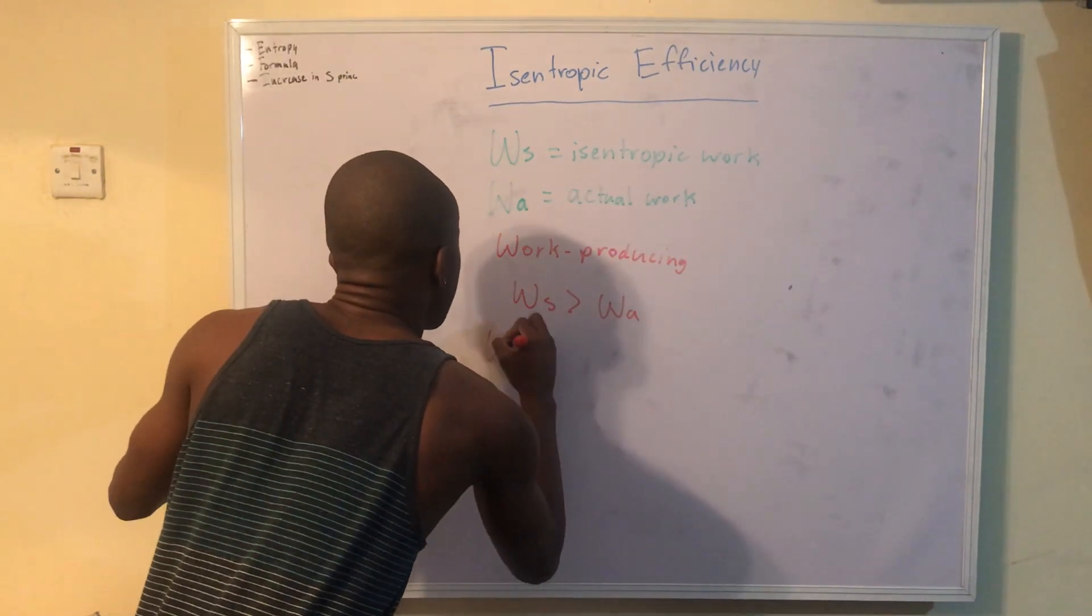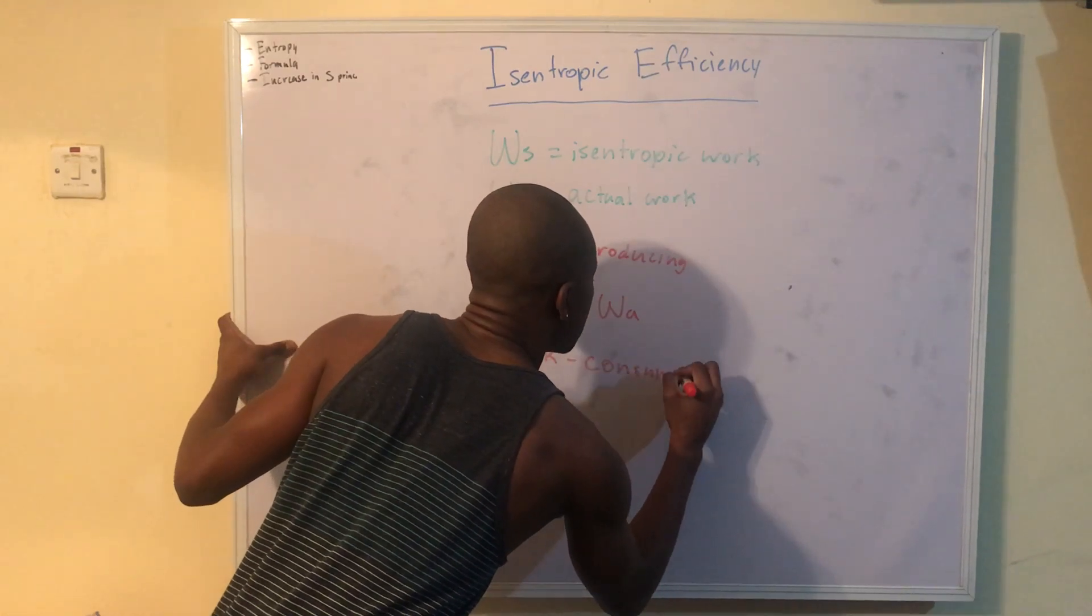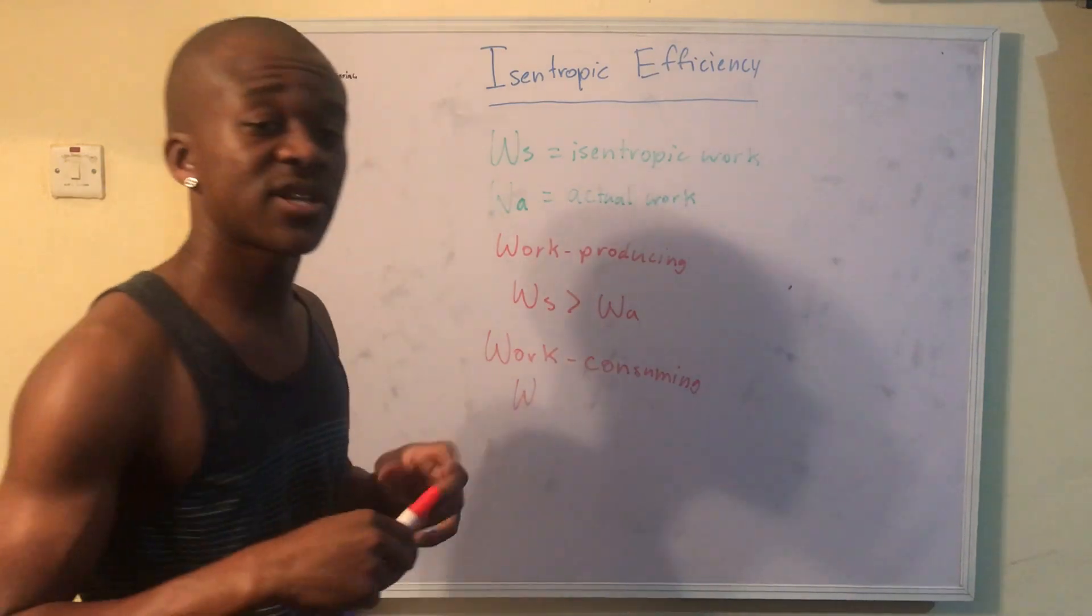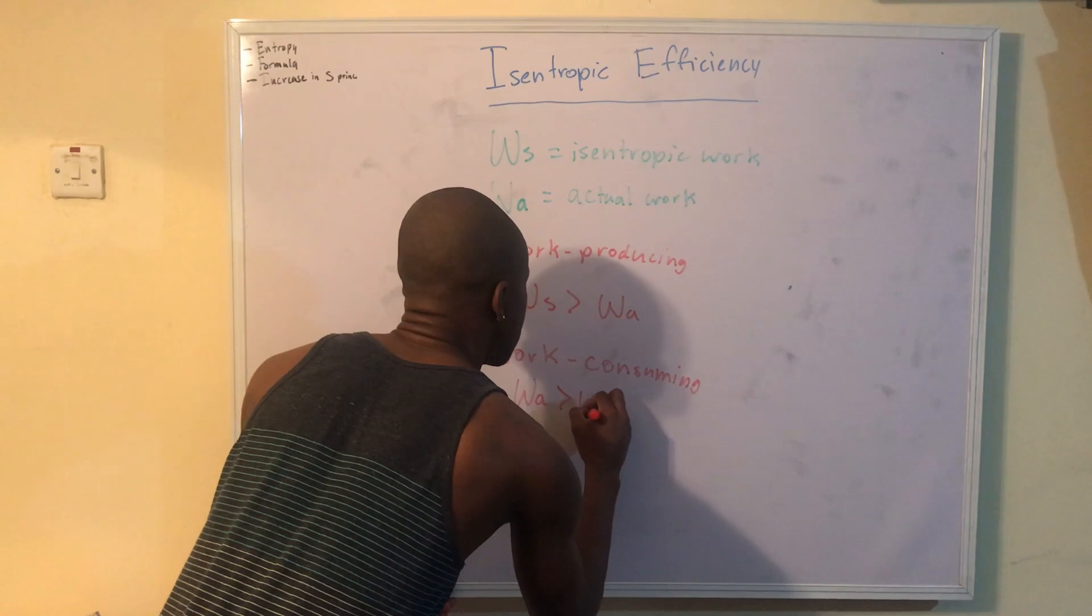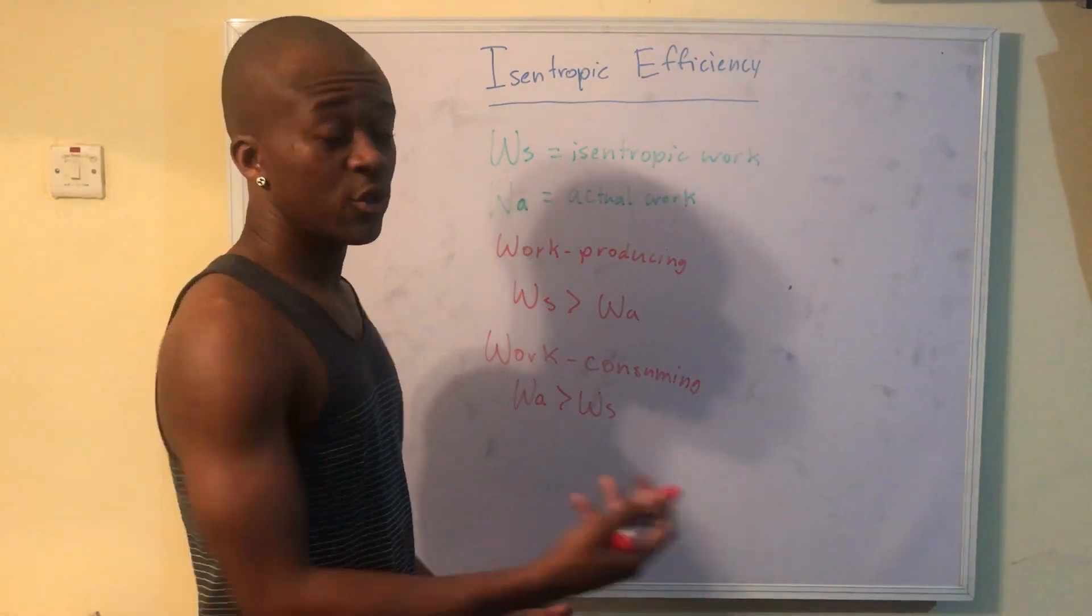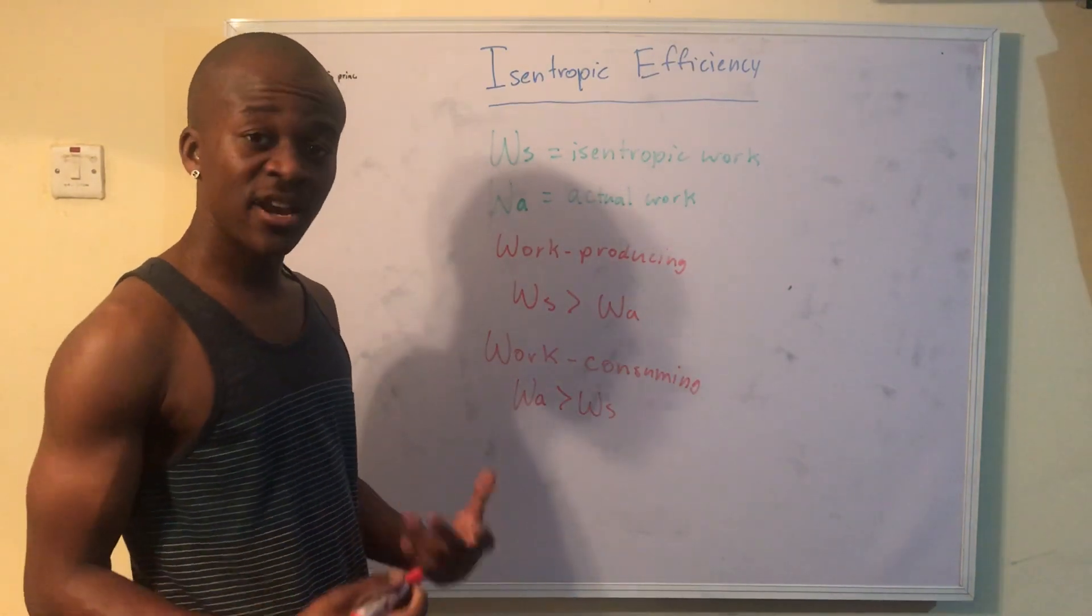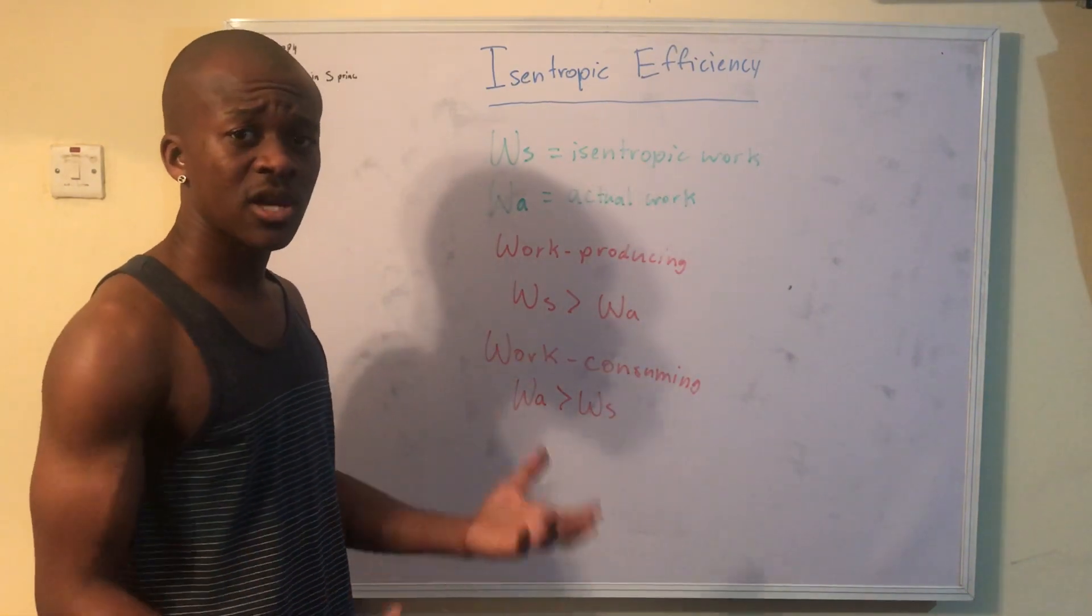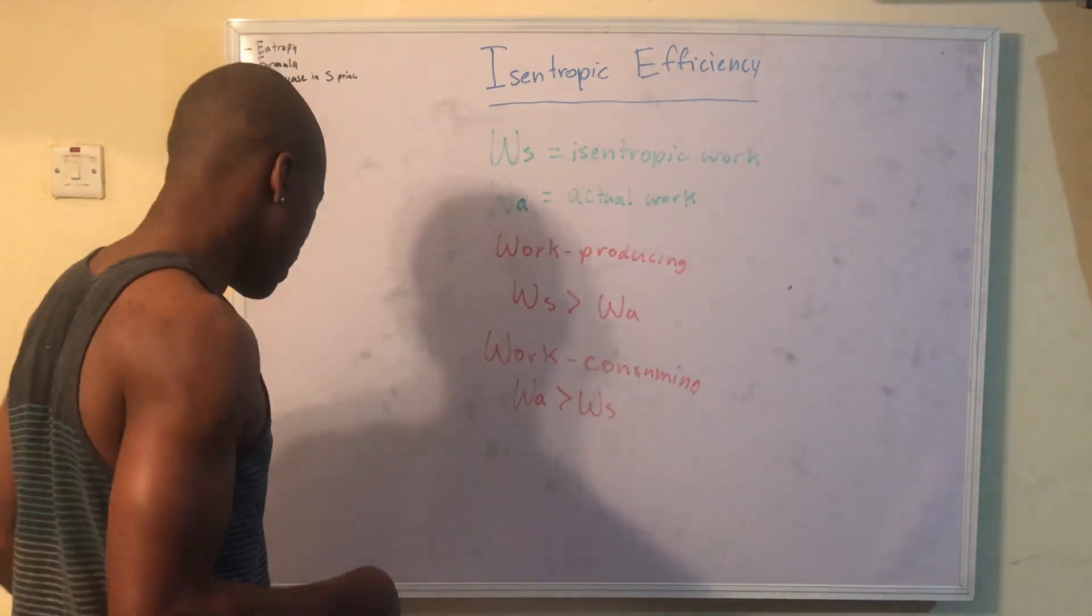So WS is always greater than WA for a work-producing device. For a work-consuming device, it's the other way around. And this makes sense. When we're dealing with a perfect system, the way I think about it is that basically, the more work you put in, the more it costs you. You're putting energy into that system, you're putting work inside, the more it's costing you. A perfect system is going to cost you less, meaning that you put in less work.